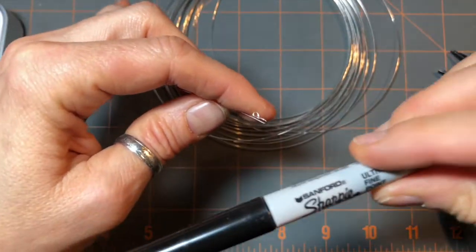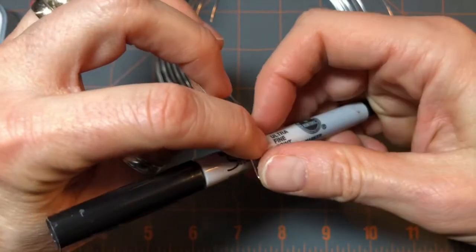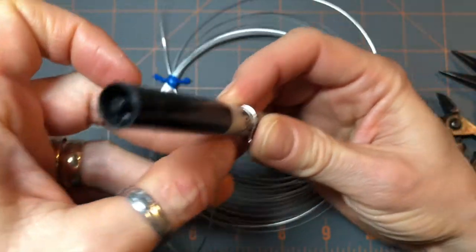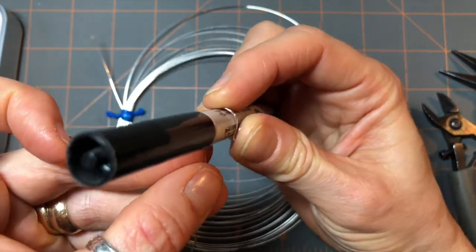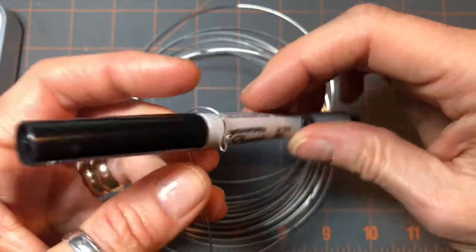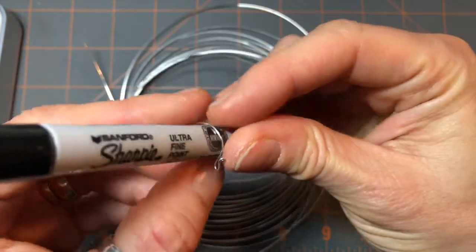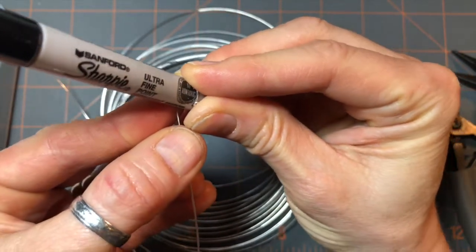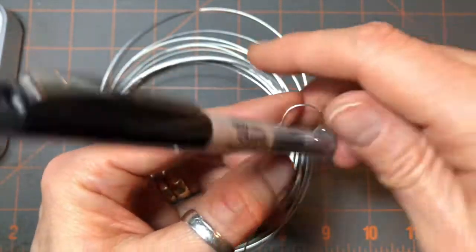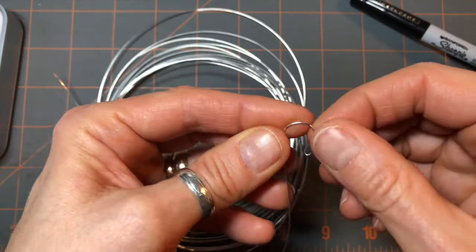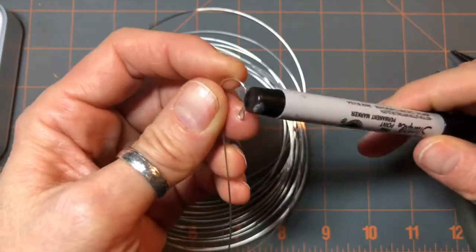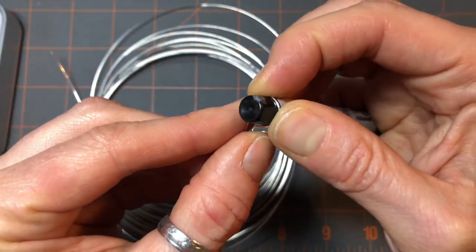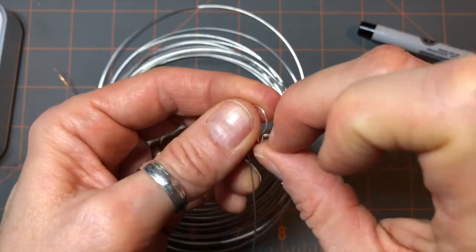So next you're gonna take a sharpie pen or anything round like that. And you're gonna wrap your wire around it. And that's gonna create the hook that goes through your earlobe. So you just have to take your fingers and kind of shape that wire around your pen or whatever you're using to get that shape right. I thought it was a little big so I went to the smaller end of my sharpie and just kind of shaped it around that.